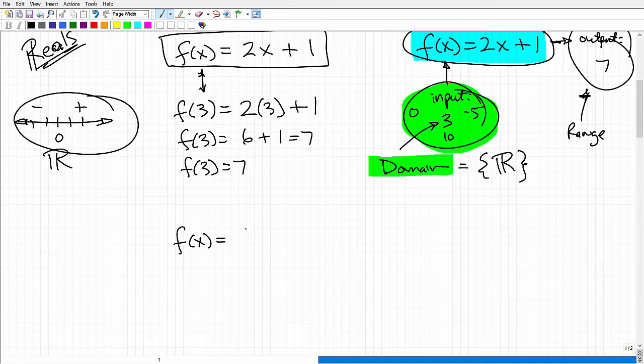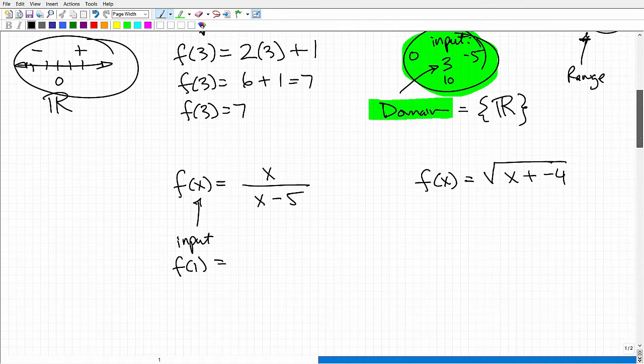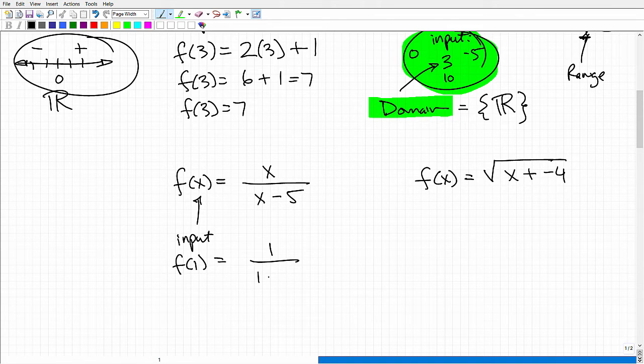I can plug in a negative value. I'll get a number out. I can plug in zero. Two times zero is zero, plus one. So my answer would just be one. But everything is fine. So my domain, in this case, is the set of all real numbers. And there's a lot of ways we can express that. This is one way that we can do it. But that's basically it. So I can plug in any real number along the real number line into this function. It's not going to hurt it. I'll always get a number out. And my range will be all real numbers as well.